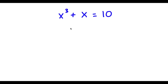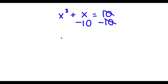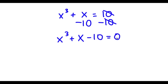In this problem, I have x to the power of 3 plus x is equal to 10. To solve this, I'm going to first start by subtracting 10 on both sides. So now I have x to the power of 3 plus x minus 10 is equal to 0.